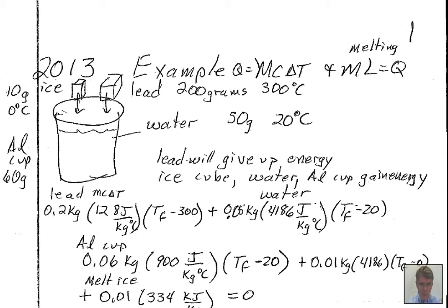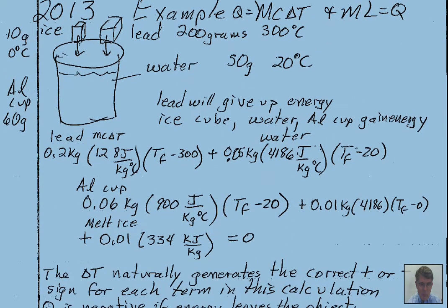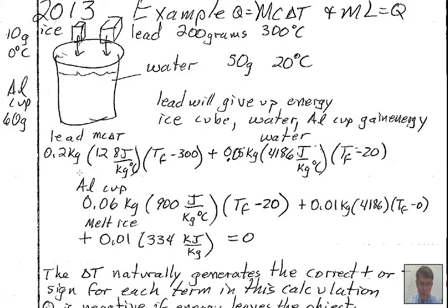Starting with the lead: converting 200 grams to kilograms gives 0.2 kilograms. I do this because the specific heat constant for lead is given in joules per kilogram. From the OpenStax College Physics table we find 128 joules per kilogram per degree Celsius. The delta T for the lead is temperature final minus temperature initial — the final temperature is our unknown TF, and 300 degrees Celsius is the initial temperature of the lead.